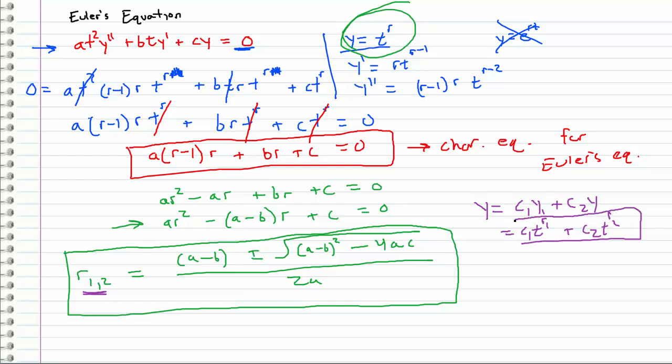So this is our answer, but it's not always that simple. There are three cases just like we had in the constant coefficient case. We have real roots, we have imaginary or complex roots, and we also have repeated roots. In each of these cases we're going to be doing a very similar thing.